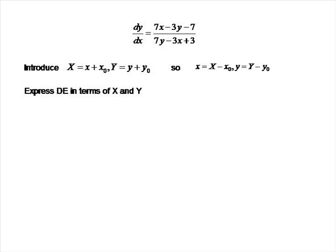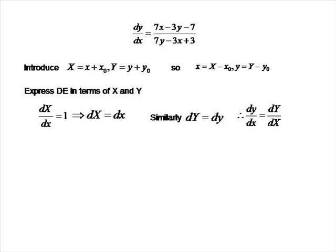Since capital X is equal to little x plus x₀, we differentiate both sides with respect to little x. We get that dX/dx is equal to 1; in other words, d capital X is the same as d little x. The same thing is true for the y's. This means that dy/dx is the same as dY/dX, which is the left-hand side of the differential equation we were given.